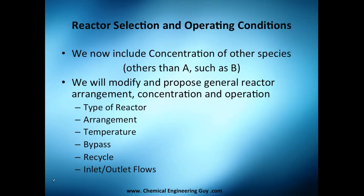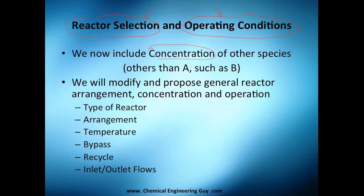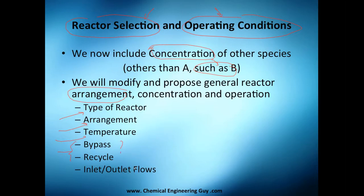It's time to start with our reactor selection in order to maximize selectivity. We're going to choose first a reactor and second how we are going to operate that reactor. We're going to include not only concentrations we've seen before but also concentrations of other substances. We will modify and propose general reactor arrangements, looking at what type of reactor is convenient and in what arrangements — high temperature, low temperature, bypass, or recycle.